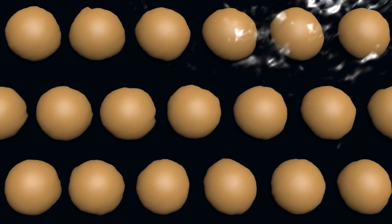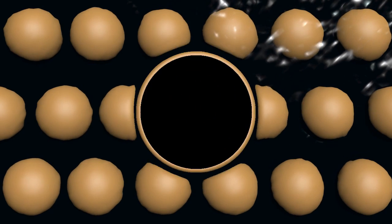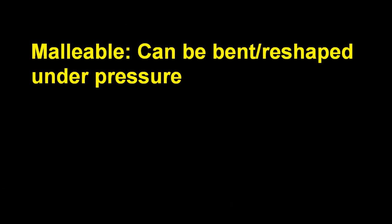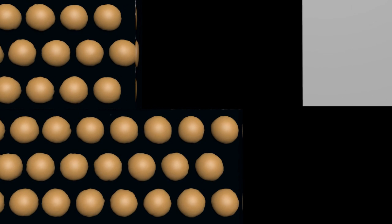So malleable means that something can be bent or reshaped under pressure, traditionally with a hammer. So if you were to hammer a metal, the metal ions will move in such a way that they're rearranging themselves. But the structure itself of the metal isn't brittle and it won't shatter, it would just bend. It's malleable.